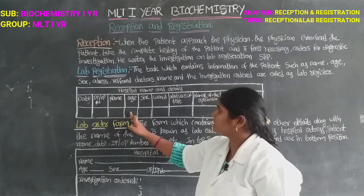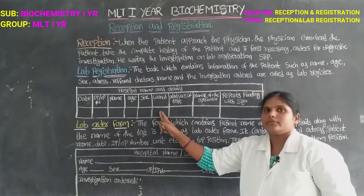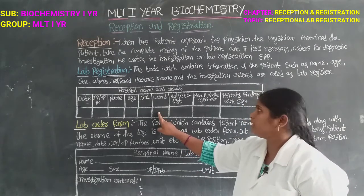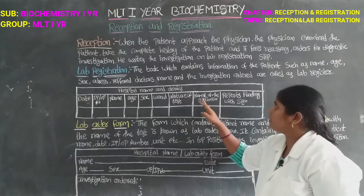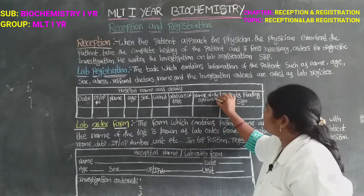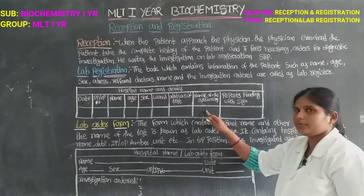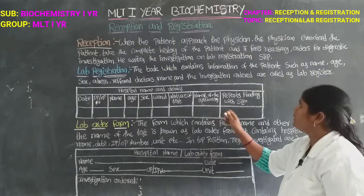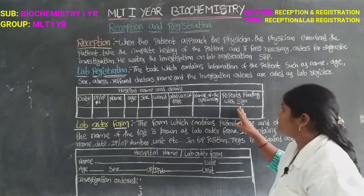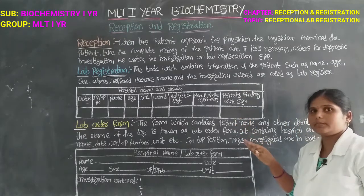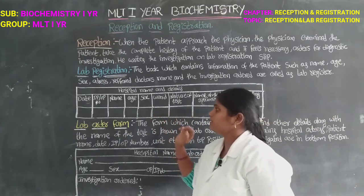We have the patient name, age, and male or female. If the patient is an inpatient (IP), we have a ward number. We also record the nature of the test, the test name, and the name of the specimen — for example, blood or urine samples. Then the report findings are recorded and signed by the lab technician. All of this is entered in the lab registration.